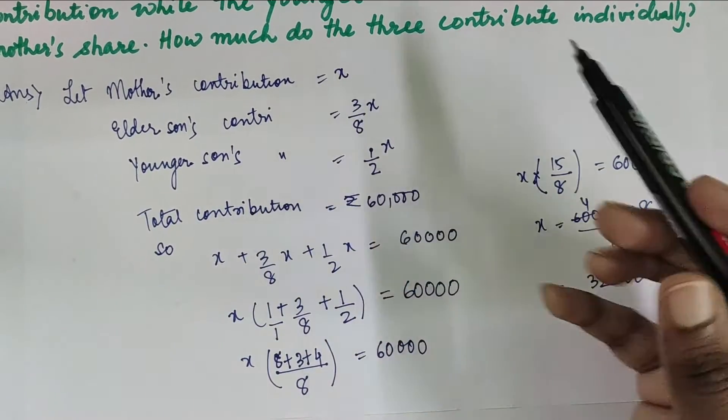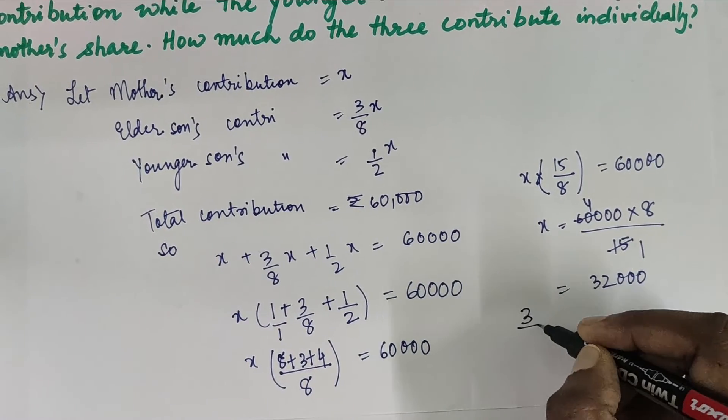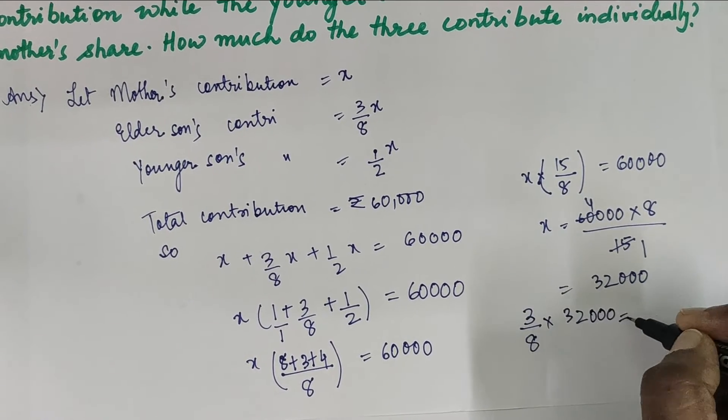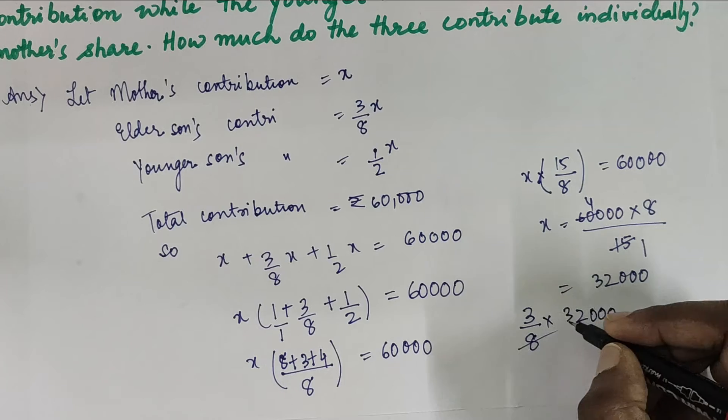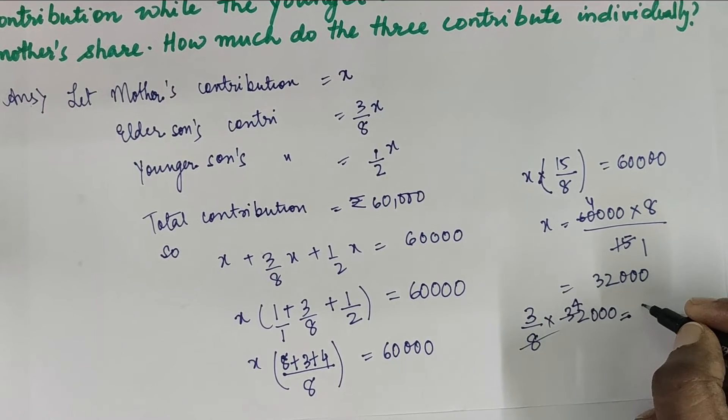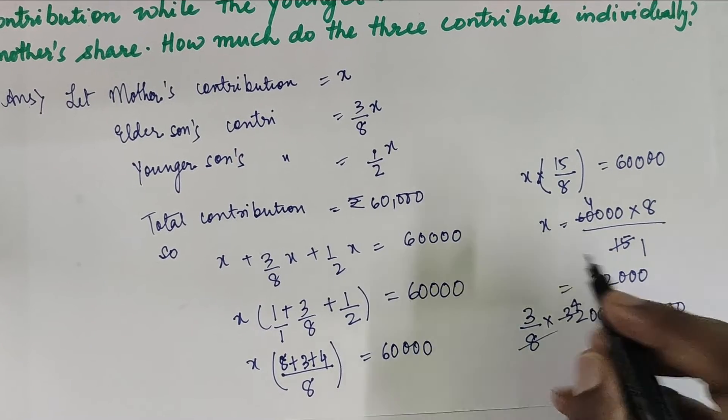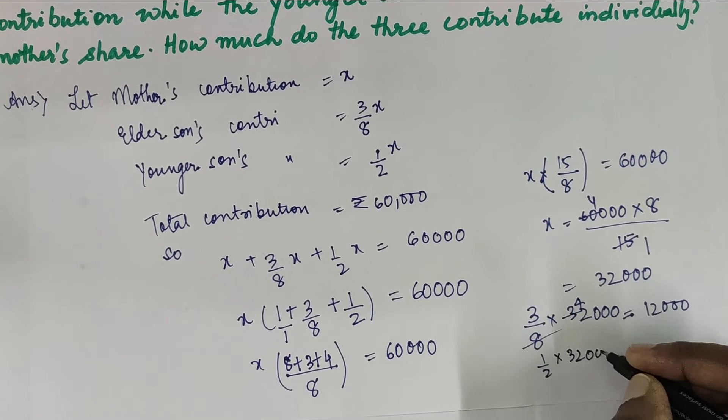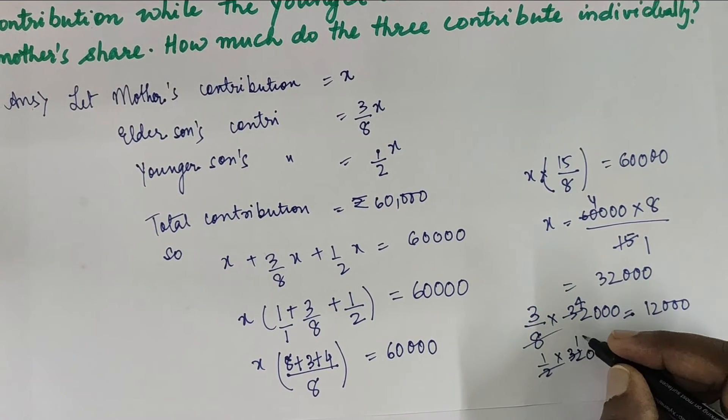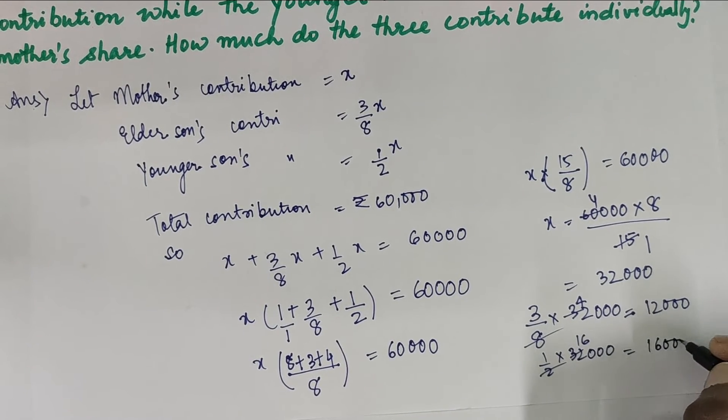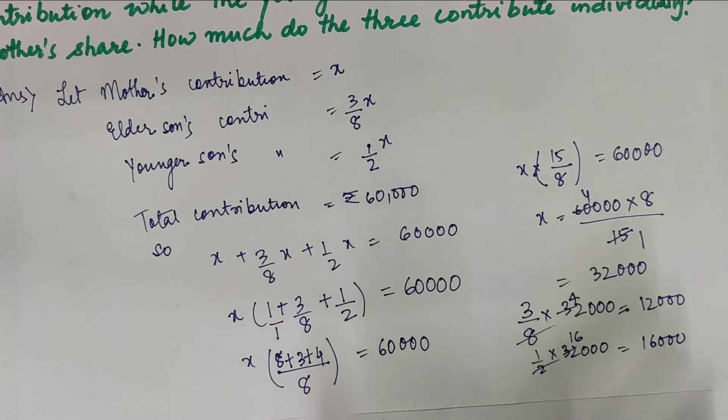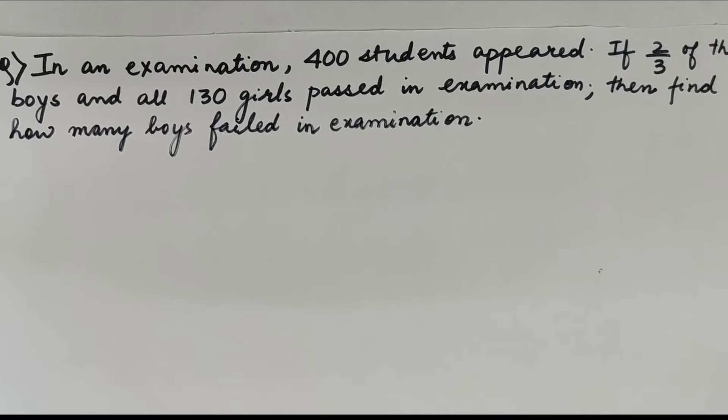How much will be the elder son's contribution? 3/8 of x, that is 3/8 of 32,000, which is 12,000. And 1/2 of mother's contribution as the younger son's contribution, that is 16,000. Then you can write the statement for each of these. Now let us go to the next question.